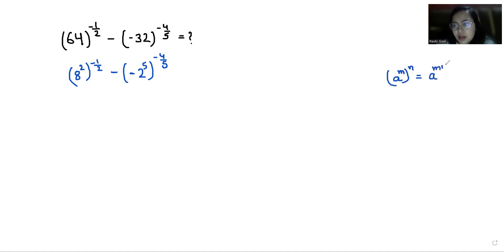So 8 power 2 times negative 1/2 minus negative 2 power 5 times negative 4/5. We can cancel out this 2 with 2 and 5 with 5.